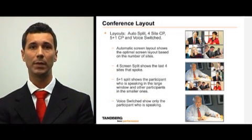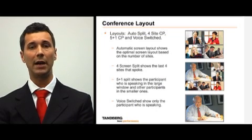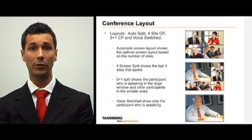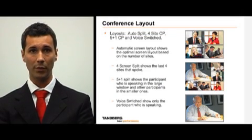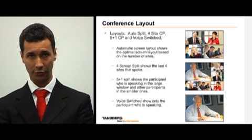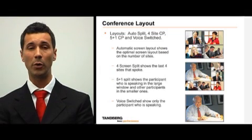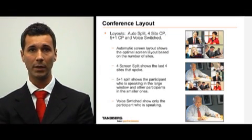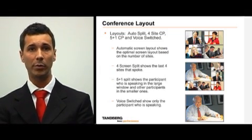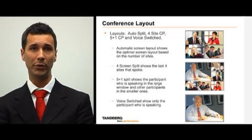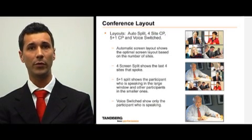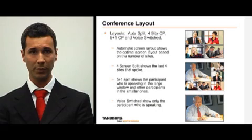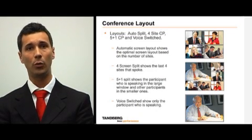Conference layout: The automatic screen layout shows the optimal screen layout based on the number of sites participating in the conference. The 4-site continuous presence shows the last 4 sites that spoke in the conference. The 5-plus-1 continuous presence view shows the participant who is speaking in the large window, with the other 5 participants shown in the smaller ones. The voice switched mode shows the participant who is speaking on the whole screen.